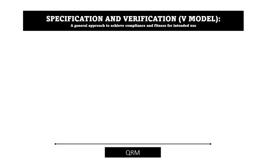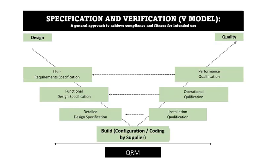In this slide, we will discuss about the specification and verification approach, often called the V-model. This is a general approach to achieve compliance and fitness for intended use. The system is built and configured by the manufacturer. The design of the system includes the user requirement specification, functional design specification, and detailed design specification. After procurement of the system, we perform installation qualification as per the system design specification. After completion of installation qualification, we perform operational qualification that must meet the requirements of the functional design specification. Further, we perform performance qualification as per the user requirement specification. Performing IQ, OQ, and PQ reflects the quality approach to validate a system, and identified risks shall be managed by the QRM approach.